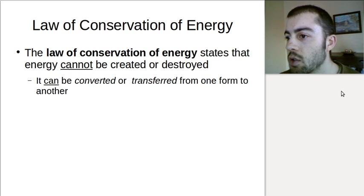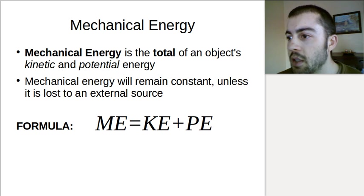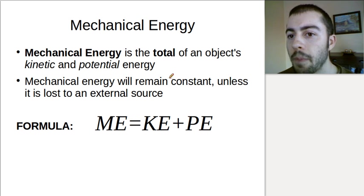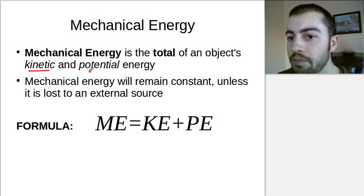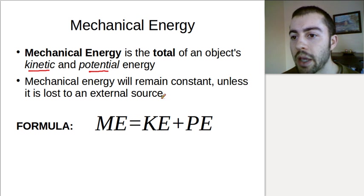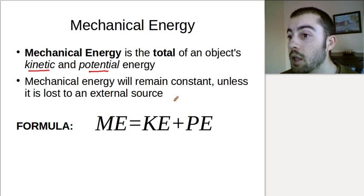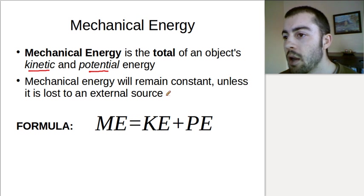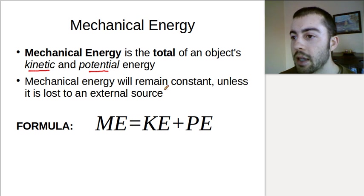This leads us to the concept of mechanical energy. Mechanical energy is the total of an object's kinetic and potential energy. Based on the law of conservation of energy, mechanical energy will stay constant unless it's lost to an external source. So unless there's friction or air resistance or something taking energy away from our object, it's going to maintain the energy that it has.